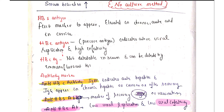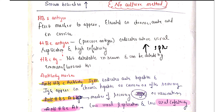HBeAg, the pre-core antigen, indicates active viral replication and high infectivity — the chance of disease spread is high in patients with this antigen. HBcAg, the core antigen, is not detectable in serum but can be detected by the immunofluorescence test.